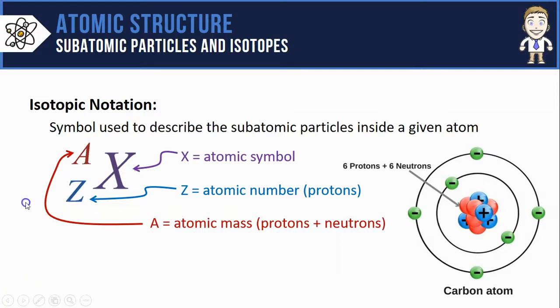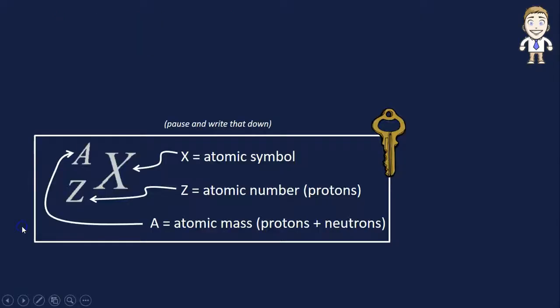So if we were to apply this notation style to the carbon atom shown, I'd start off with a capital C because that's the element symbol for carbon. I'd put a 6 on the bottom left because this atom has 6 protons, and I'd put 12 on the top left because there's also 6 neutrons, and 6 plus 6 gives me a mass of 12. We use this notation style a lot in chemistry, and it's another key idea for the video. Make sure you pause and write it down.